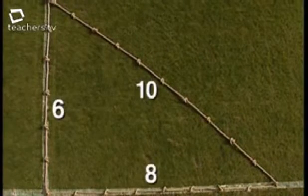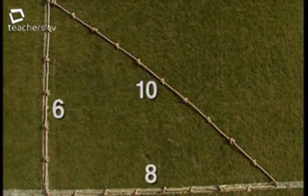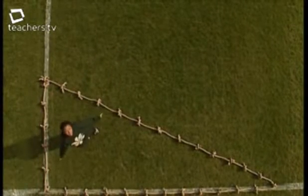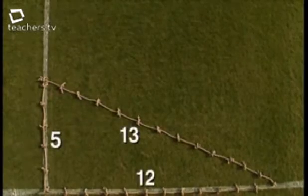A 6-8-10 triangle has a right angle as well. It also works with a 5-12-13 triangle. A group of three whole numbers that obey the theorem are known as a Pythagorean triple, and ancient mathematicians were always keen to find other whole-number triples. Maths exams often feature them, so it's worth remembering that a 3-4-5 triangle and a 5-12-13 triangle both have right angles. See if you can find some other whole-number triples.